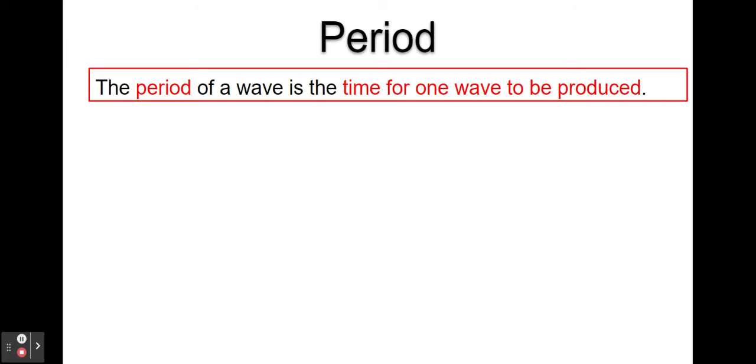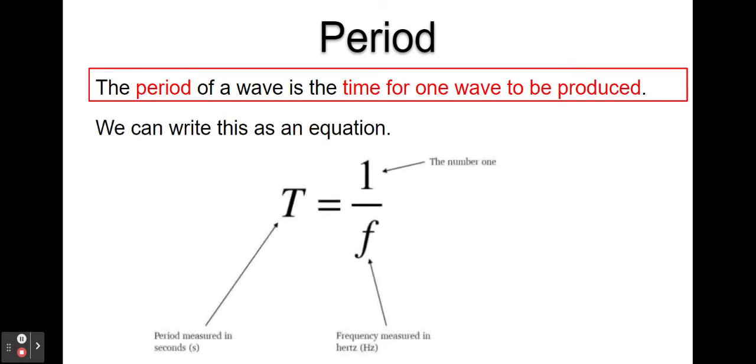Period is sort of the inverse of frequency. Where frequency was the number of waves produced per second, the period is the number of seconds for one wave to be produced, or the time for one wave to be produced. We can calculate it from frequency by working out the inverse: 1 divided by the frequency is equal to the period, and the opposite is also true. Period has a symbol capital T and is also measured in seconds.